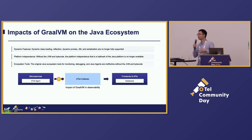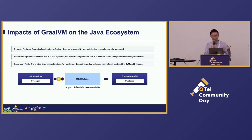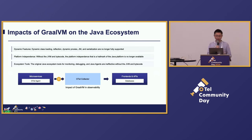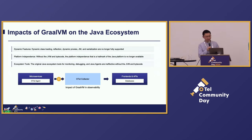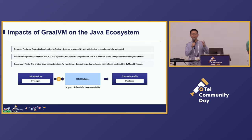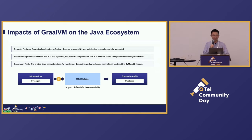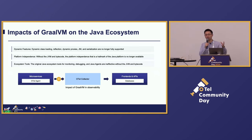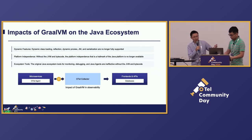But GraalVM also brings some impacts to the Java ecosystem. First, dynamic features are no longer fully supported under GraalVM — for example, reflections, dynamic class loading, and dynamic proxies no longer work. Secondly, the platform independence that Java has been proud of for years is no longer available. And finally, the most important one is the Java agent that we have been using for observability — to collect metrics, traces, and other data — will not work under the GraalVM native image. So how do we solve this problem? My colleague Zi Hao will introduce the solutions.